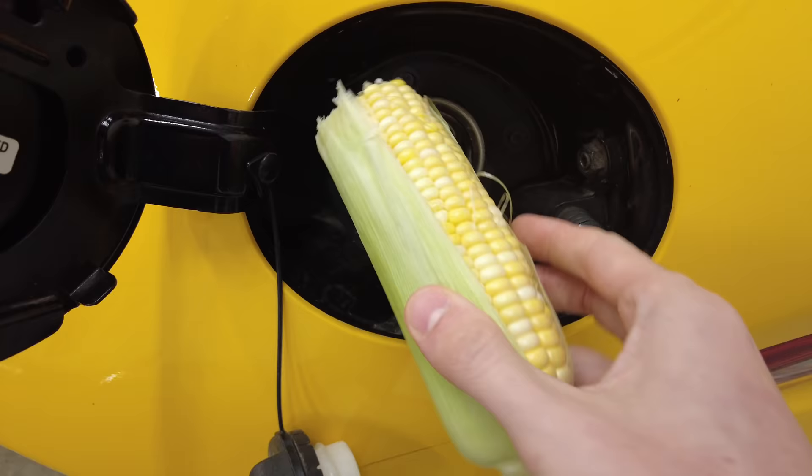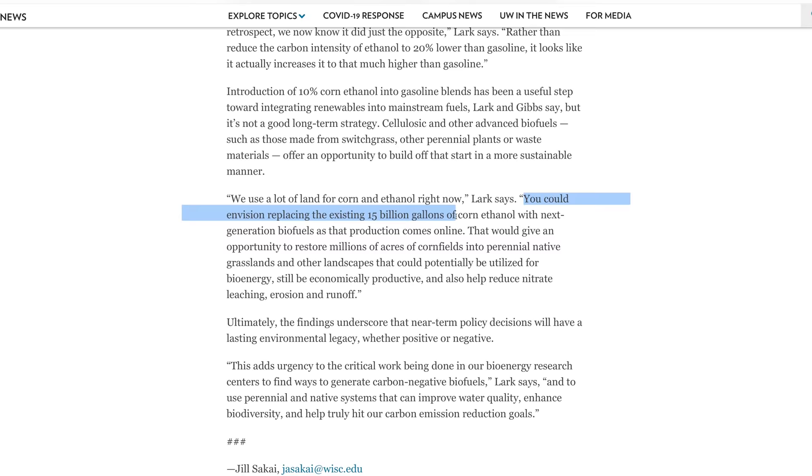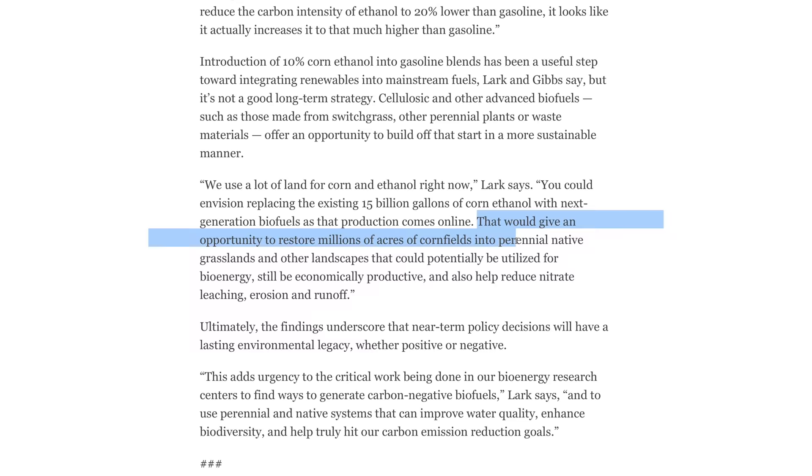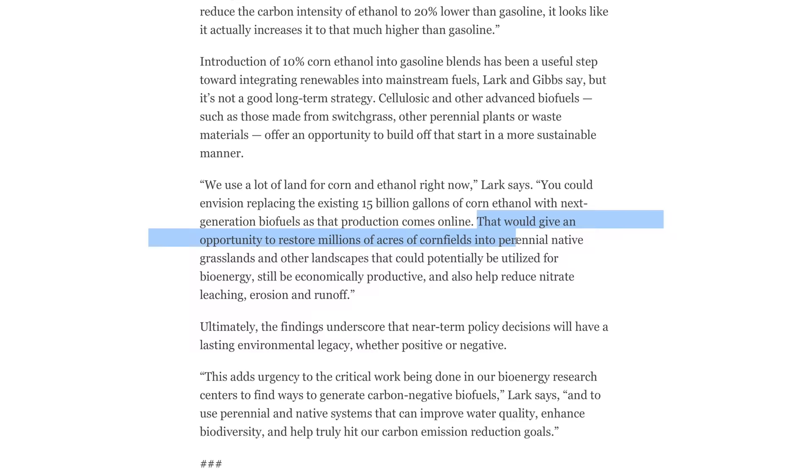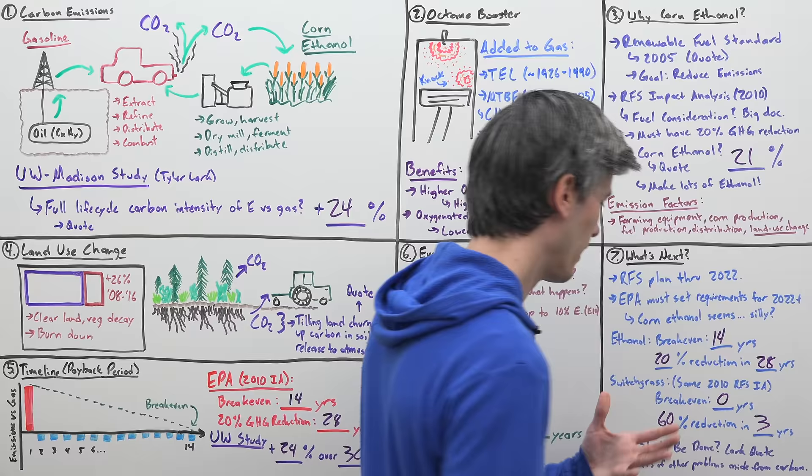So to talk about what should we do, I'm going to quote Tyler Lark of the original study. We use a lot of land for corn and ethanol right now. You could envision replacing the existing 15 billion gallons of corn ethanol with next generation biofuels as that production comes online. That would give an opportunity to restore millions of acres of cornfields into perennial native grasslands and other landscapes that could potentially be utilized for bioenergy, still be economically productive, and also help reduce nitrate leaching, erosion, and runoff.